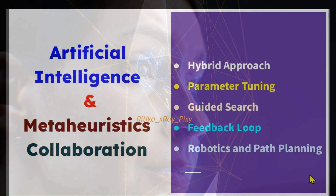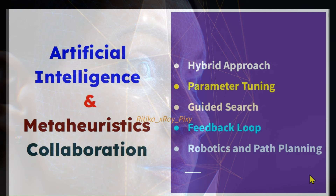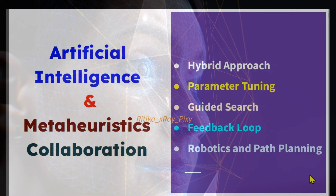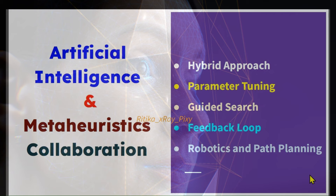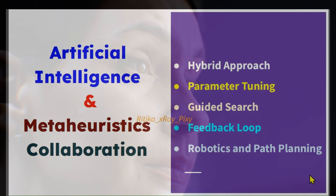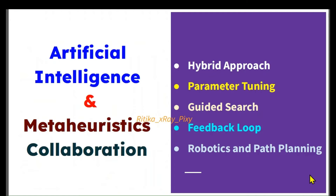In guided search, meta-heuristic search agents explore the search space to find optimal solutions, and artificial intelligence can provide guidance to this process. We can use machine learning to learn heuristics from previous problem iterations that guide the meta-heuristic algorithm's search. Additionally, we can use AI to provide real-time feedback by predicting the performance of meta-heuristic algorithm strategies, allowing the best candidates to be identified.